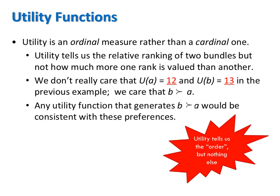For example, we could have had the utility from A equal to 12 and the utility from B equal to 12,000. In this example, like the previous example, the utility from B was greater than the utility from A, leading us to conclude that B is strictly preferred to A.